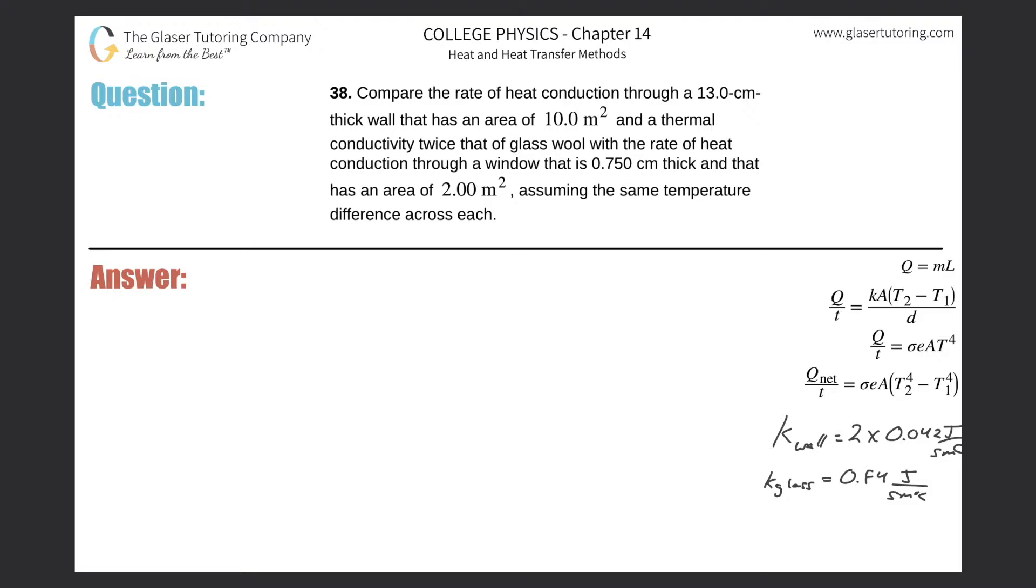Number 38: Compare the rate of heat conduction through a 13 centimeter thick wall that has an area of 10 square meters and the thermal conductivity twice that of glass wool with the rate of heat conduction through a window that is 0.75 centimeters thick and that has an area of two meters squared, assuming the same temperature differences across each.